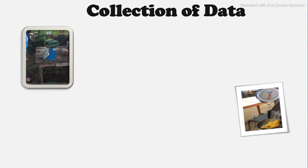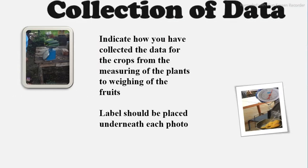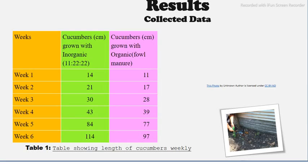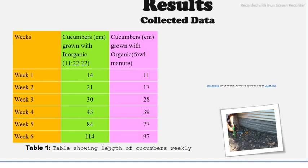We are picking up from part four and now we are looking at collection of data. Indicate how you have collected the data for the crops, from the measuring of the plants to the weighing of the fruits. Also ensure that your photos are labeled. You also want to indicate your results and your collected data, so you have your tables with your information. You have weeks one to six, cucumbers in centimeters — that's the stem of the cucumber grown with inorganic fertilizer — and the third column cucumbers in centimeters grown with organic fertilizer, which is fowl manure. Ensure that your table is also labeled.